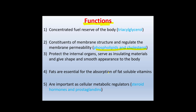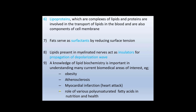Fats protect internal organs, serve as insulating materials, and give a smooth appearance to the body. Fats are essential for the absorption of fat-soluble vitamins. Lipids are important as cellular metabolic regulators including steroid hormones and prostaglandins. Lipoproteins are complexes of lipids and proteins involved in the transport of lipids in blood and are also components of the cell membrane — they should be shown when drawing the fluid mosaic model. Fats also serve as surfactants by reducing surface tension.